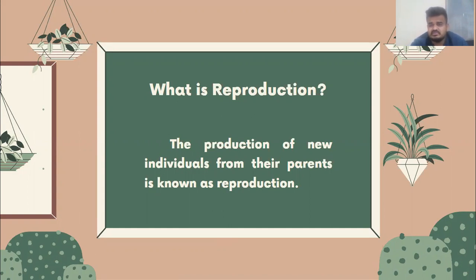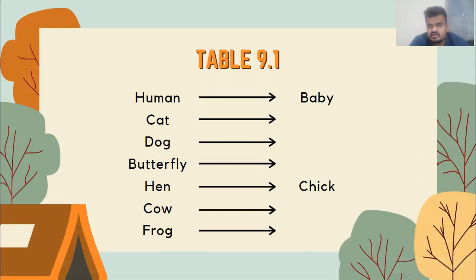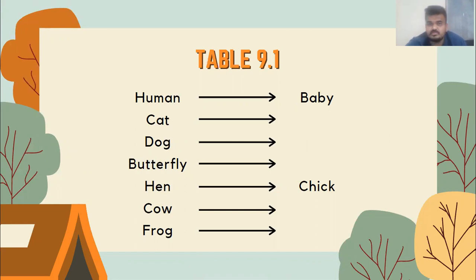Apart from humans, other animals also have reproduction. For that, you are given Table 9.1 in your textbook. Please pause the video, open your textbook and go to Table 9.1 on page number 102.